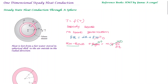Friends, in steady-state heat conduction, we previously saw the slab and the derivation for the cylinder. In this video, we'll talk about steady-state heat conduction through a sphere. If you compare the cylinder with the sphere, it's almost the same concept of derivation. The surface area formula is different for the cylinder and the sphere, but the approach is the same. If you compare all three videos, you can understand the concept easily.